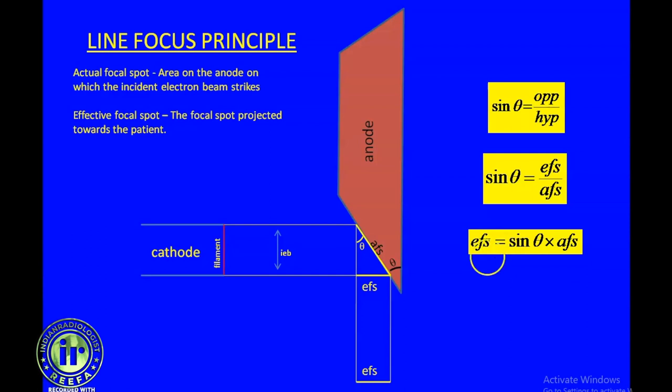In diagnostic radiology, the anode angles usually range from 10 to 13 degrees, and the size of the effective focal spot ranges from 0.6 to 1.3 millimeter. For procedures like cineangiography, the anode angle is further reduced to around 7 to 9 degrees.